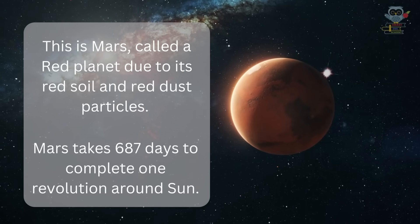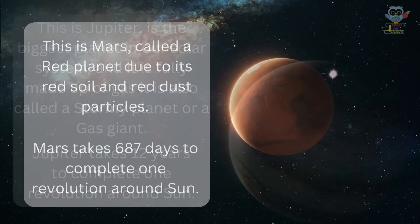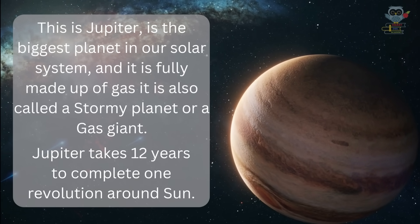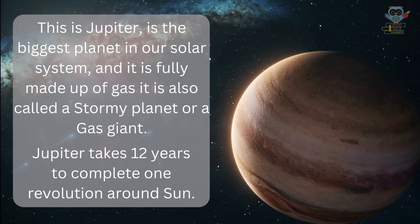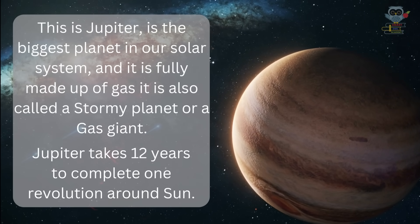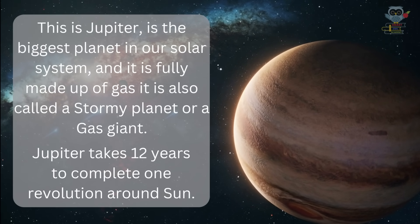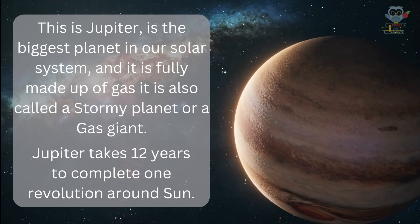This is Jupiter, the biggest planet in our solar system, and it's fully made up of gas. It is also called a stormy planet or a gas giant. Jupiter takes 12 years to complete one revolution around the Sun.